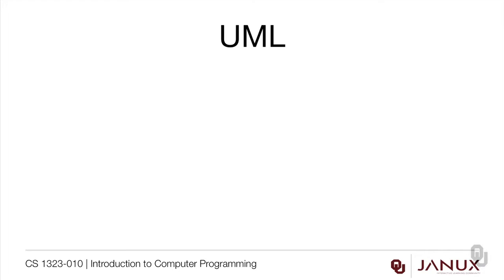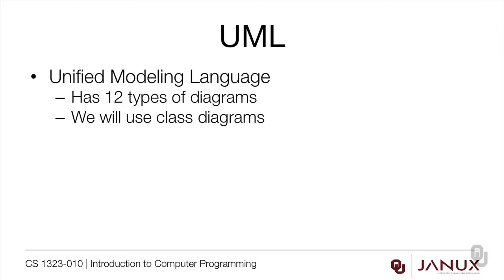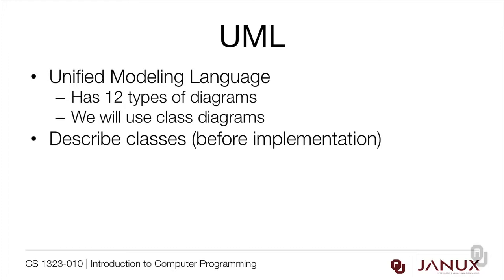We need a way of expressing our designs so we can look at them without having to read a bunch of code. Something called UML — the Unified Modeling Language — is what we use for it. There are actually 12 different types of diagrams available; we're only going to use one type this semester. Class diagrams describe classes before implementation. It's really important to describe them before you implement because that's when you can have deep discussions about how the classes should be designed. If you wait until after things are implemented, everybody gets attached to their implementation and nobody wants to rework things even if it isn't a very good design.